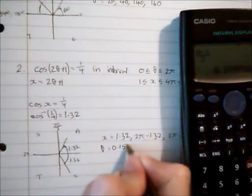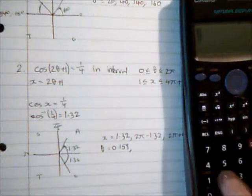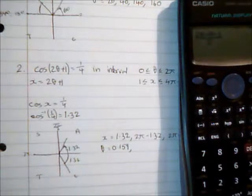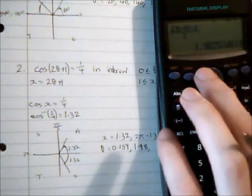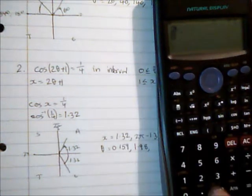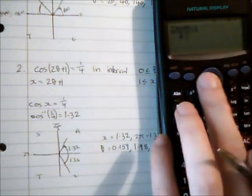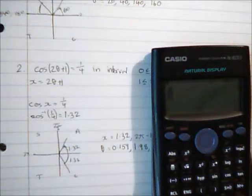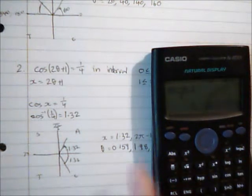The next one is 2 pi minus what was stored in memory, subtract 1, over 2, gives me 1.98. Then 2 pi plus 1.32: 2 pi plus what was stored in memory, subtract 1, divide by 2, gives me 3.32. My final one here was 4 pi subtract the angle, then subtract 1, divide it all by 2, gives me 5.12.